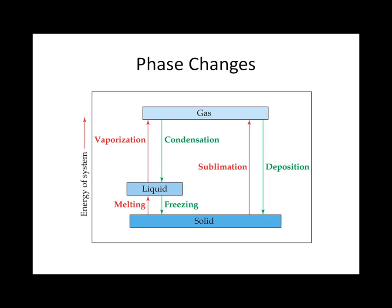All three states and the six phase changes are shown here as a function of system energy. The endothermic processes are in red and the exothermic processes are shown in green. When we change from a solid to a liquid, we call it melting. If we add more heat to the system, the liquid will turn into a gas — we call that vaporization. If the solid goes directly to a gas, we call that process sublimation.